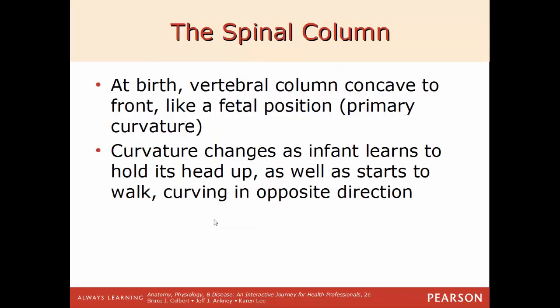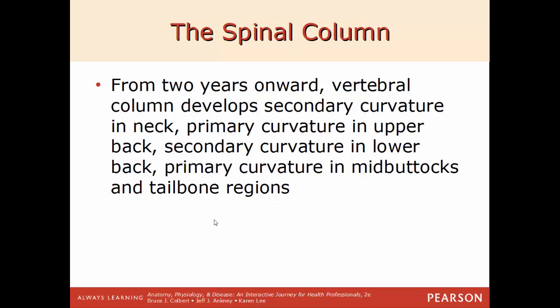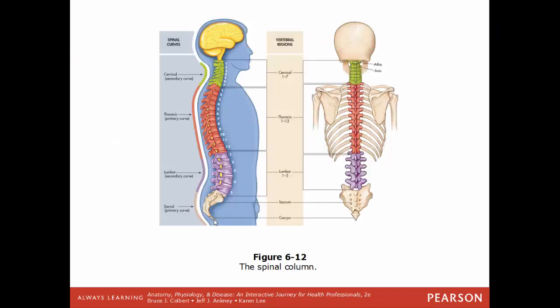At birth, the vertebral column is concave to the front, like the fetal position — called the primary curvature. This curvature changes as the infant learns to hold their head up, starts to crawl and walk, curving in the opposite direction. From two years of age onward, we develop a secondary curvature in the neck, a primary curvature in the upper back, a secondary curvature in the lower back, and a primary curvature in the mid-buttocks or sacral region.